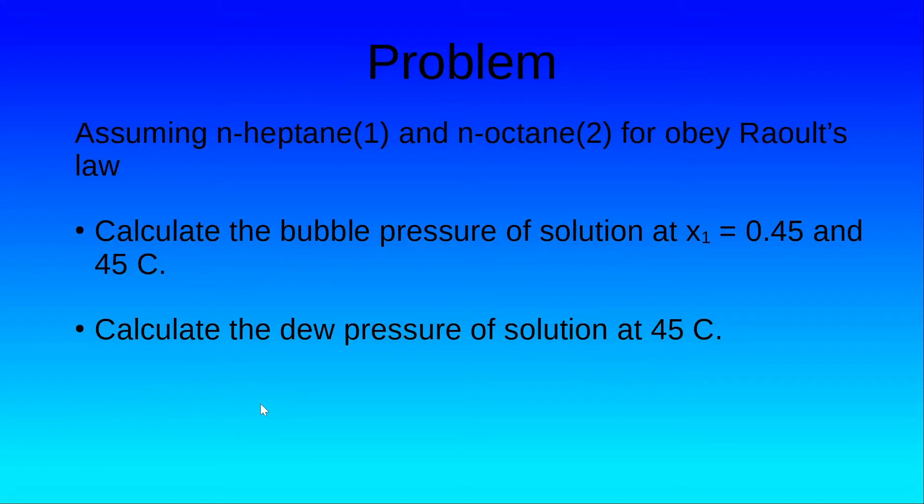So let's go to the problem. Assuming that Raoult's law applies to a system of n-heptane and n-octane, let's calculate the bubble pressure and the dew pressure at 45 degrees Celsius if the concentration of n-heptane is 0.45. So that's your problem on the screen.